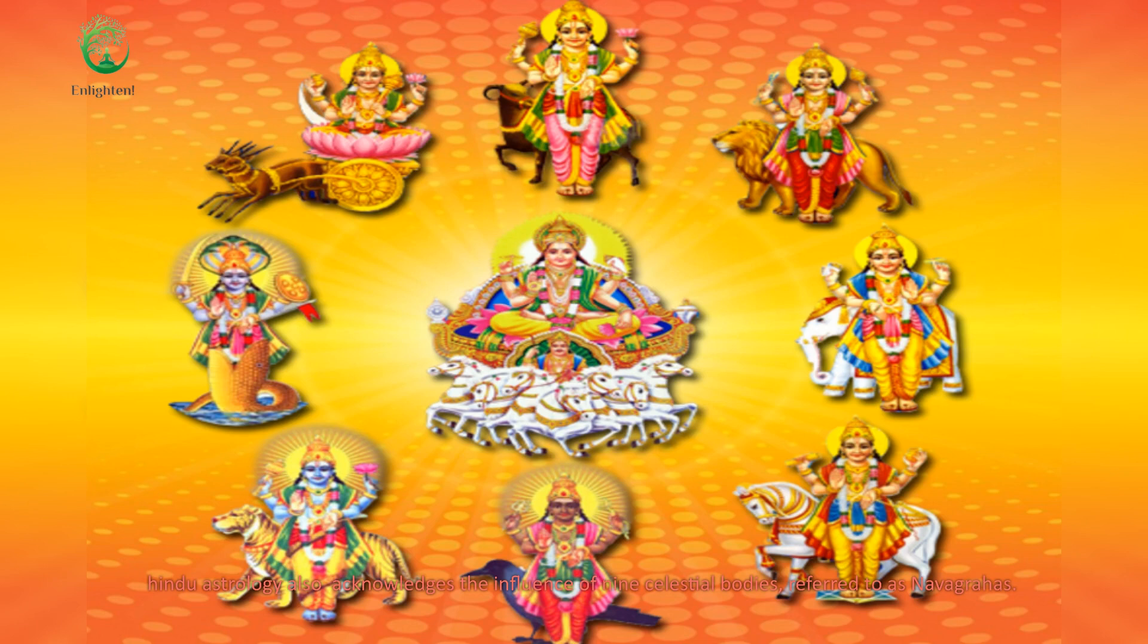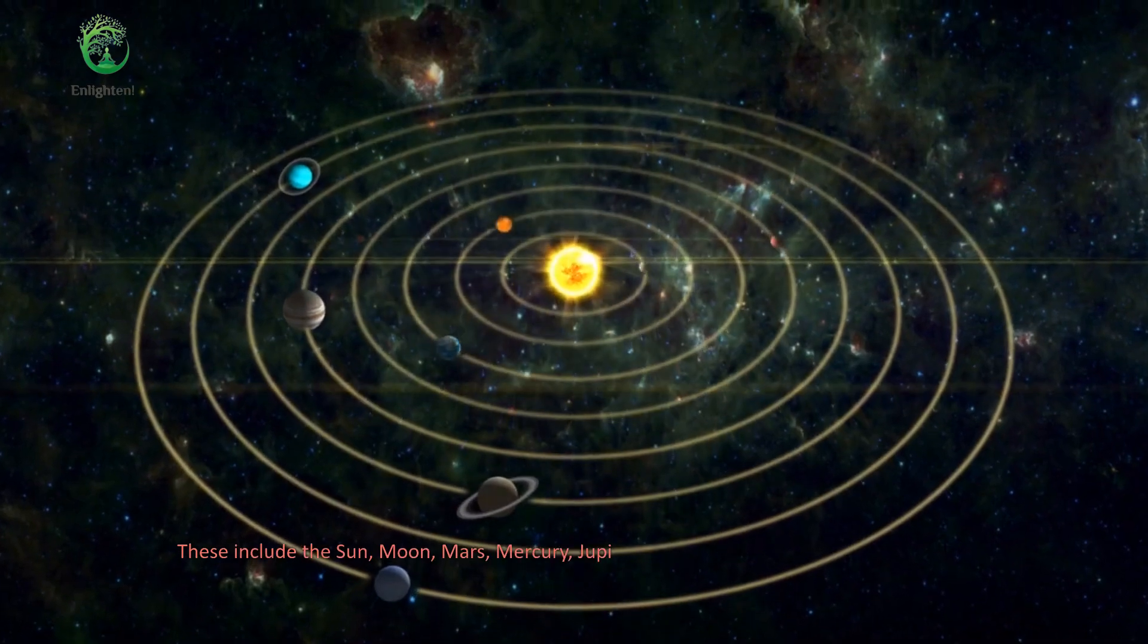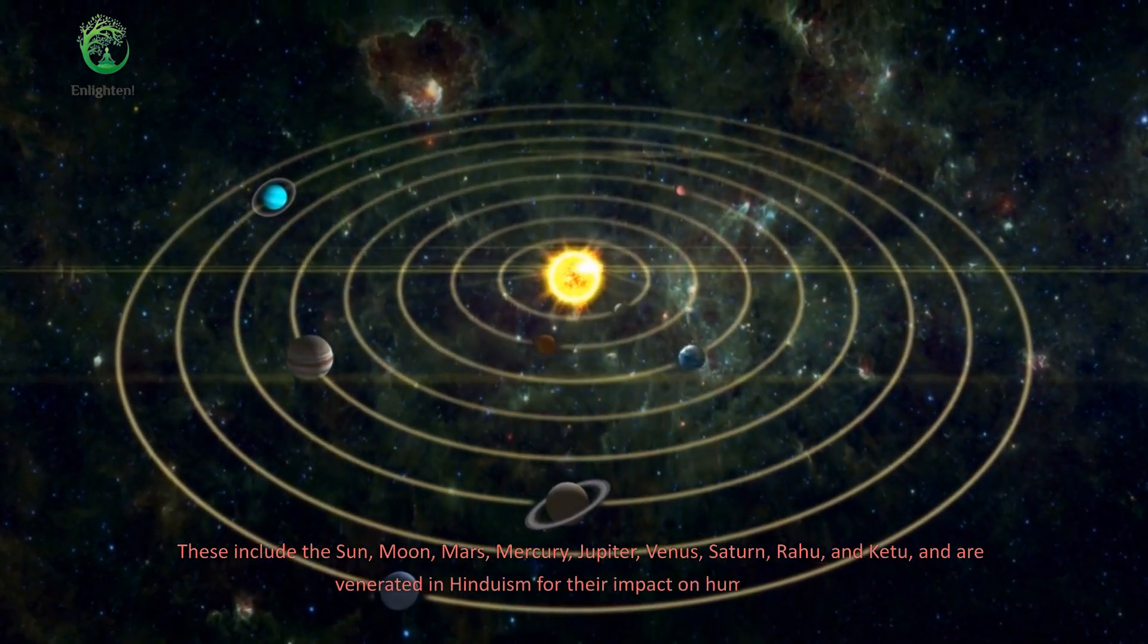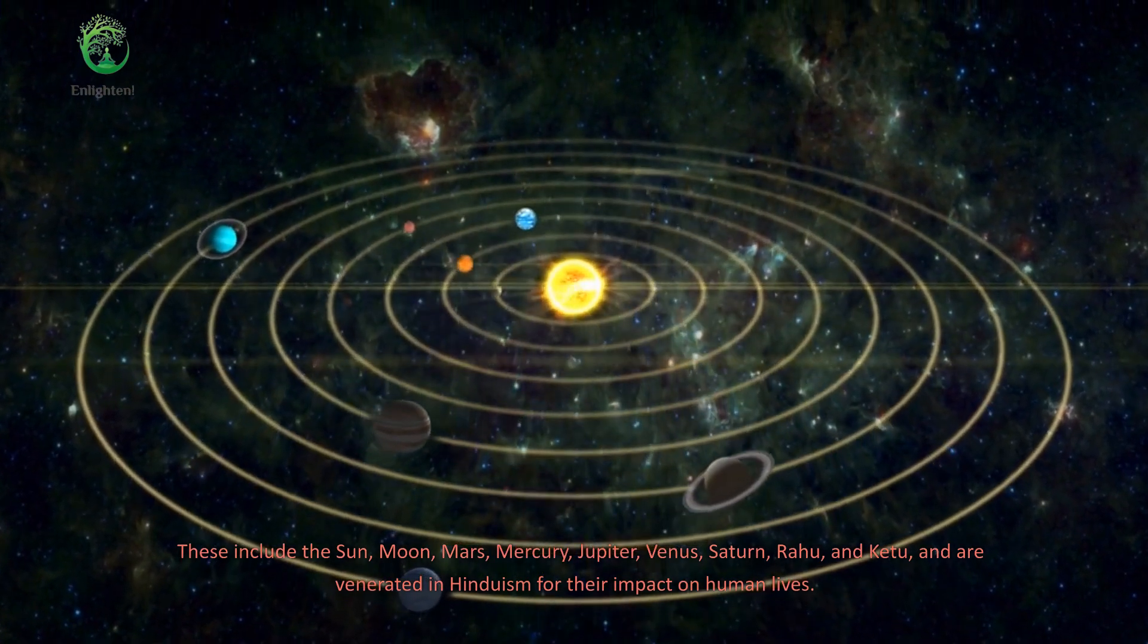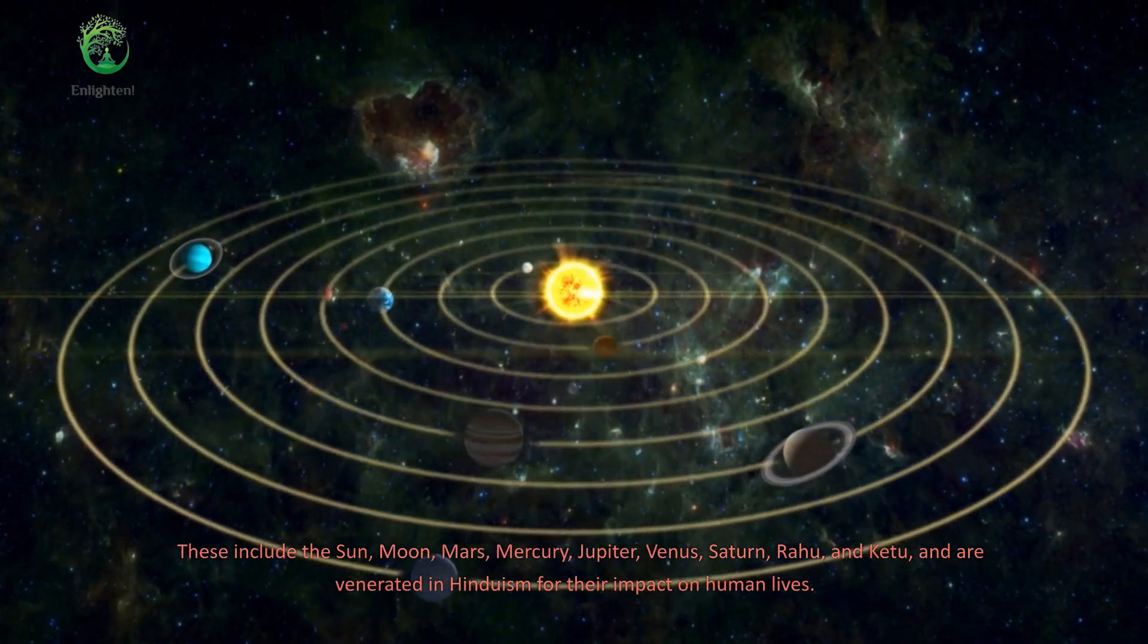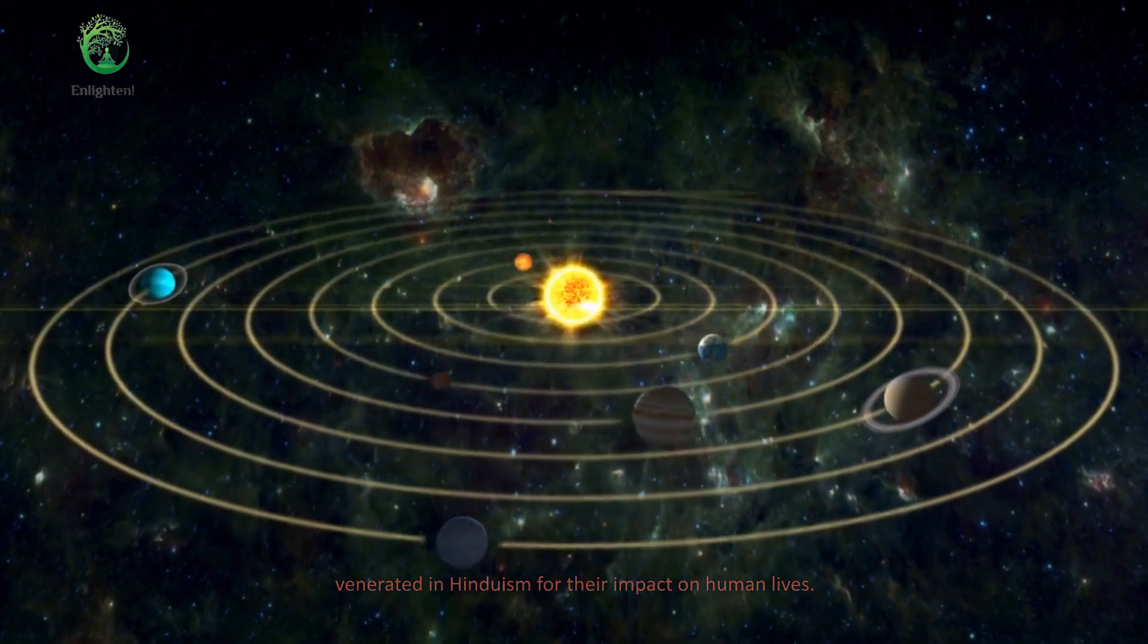Hindu astrology also acknowledges the influence of nine celestial bodies, referred to as Navagrahas. These include the Sun, Moon, Mars, Mercury, Jupiter, Venus, Saturn, Rahu, and Ketu, and are venerated in Hinduism for their impact on human lives.